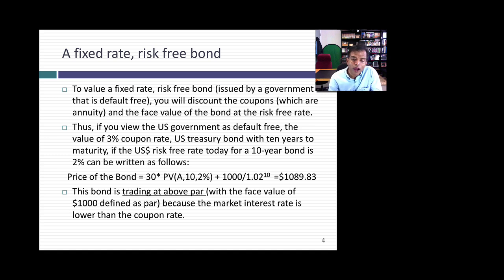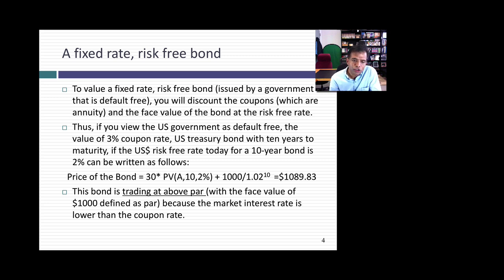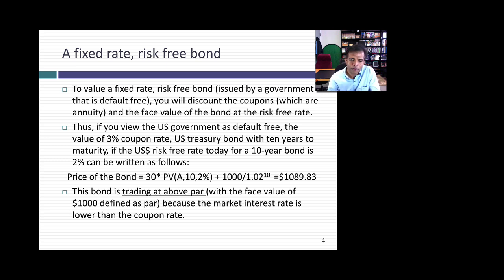This bond is described as trading at above par. Par is $1,000 — that's the face value. It's trading above par because the market interest rate on this bond is less than the coupon rate. If the market interest rate had been higher than the coupon rate, it would be trading at a discount. If market interest rates were equal to the coupon rate, the bond would trade at par.